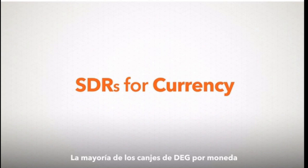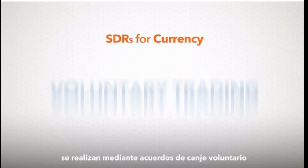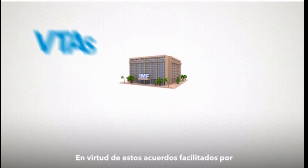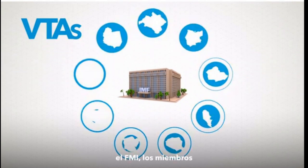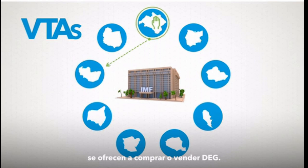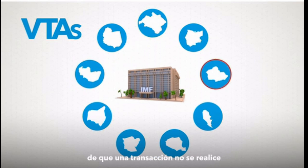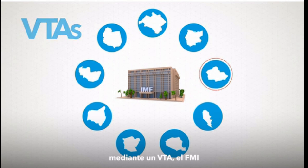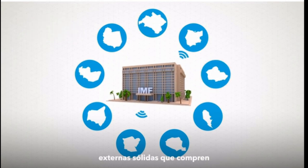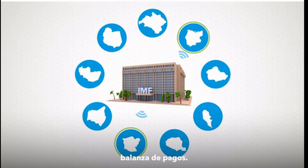Most exchanges of SDRs for currency take place through voluntary trading arrangements, or VTAs. Under these arrangements, facilitated by the IMF, members volunteer to buy or sell SDRs. In the rare and unlikely event that a transaction doesn't go through a VTA, the IMF can call on members with strong external positions to buy SDRs from members with a balance of payment need.